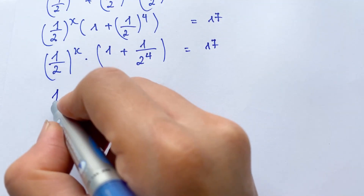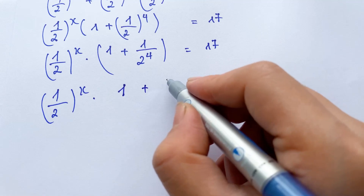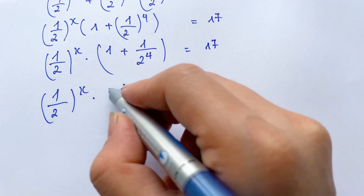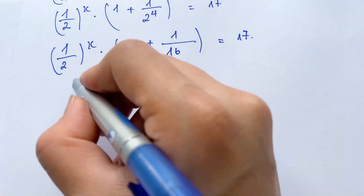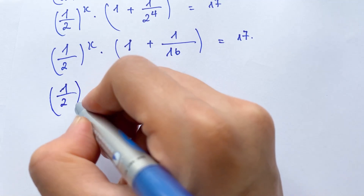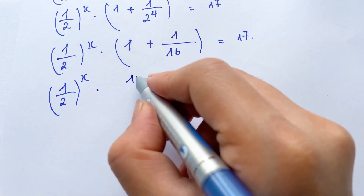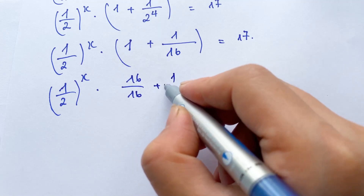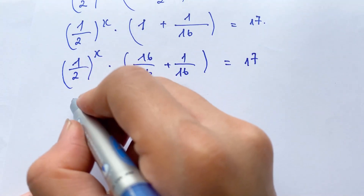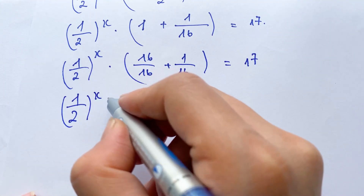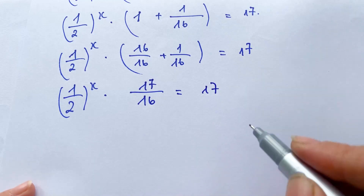And so, (1/2)^x times 1 plus 1 over 16 equals 17, which gives us (1/2)^x times 17 over 16 equals 17.